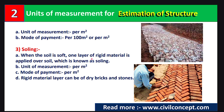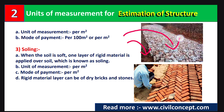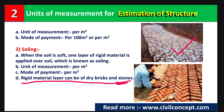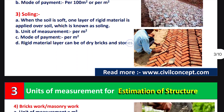The third topic is swelling. When the soil is soft, one layer of rigid material is applied over the soil, which is known as swelling. During construction we check whether the soil is soft; if so, we provide one layer using bricks or rocks. The unit of measurement is per square meter, and the mode of payment is also per square meter.